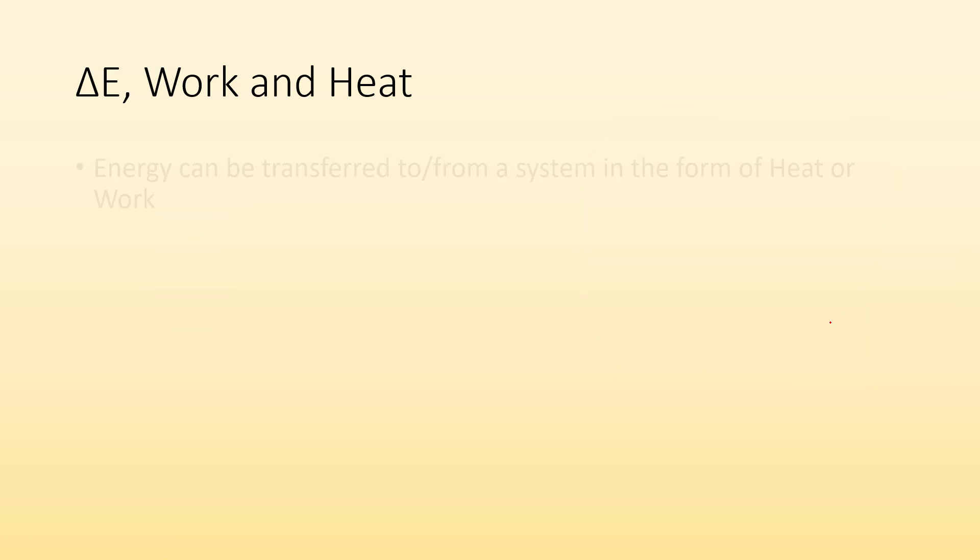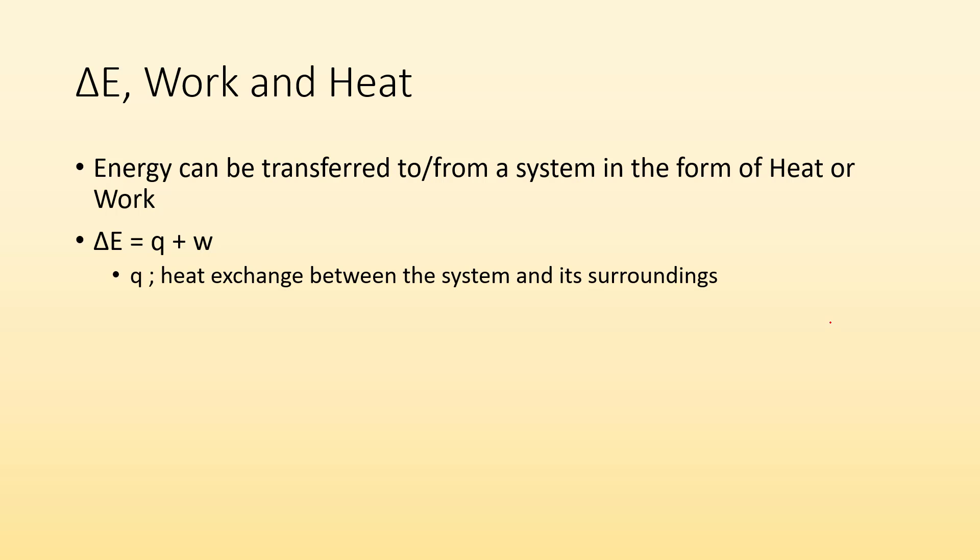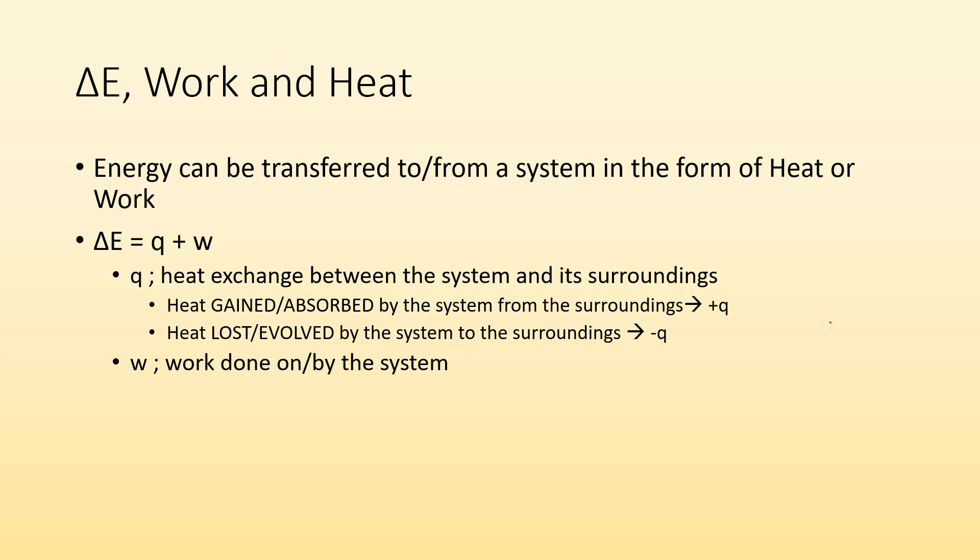So delta E, work and heat, how are they related? Well, energy can be transferred to and from a system in the form of heat or work. It can either give off heat, absorb heat, or it could do work or have work done to it. So delta E is equal to Q plus W, where Q is the heat exchange between the system and its surroundings. If heat is gained or absorbed by the system, then we have a positive value for Q. And if heat is lost or evolved by the system to the surroundings, then we have a negative Q. And W is work done on or by the system. So if we have work done on or to our system, like we're doing something to our system, we're working on it, then we end up with a positive value for W. Whereas if the system is doing work, then it's going to have a negative value for W. It's losing that energy in the form of work.